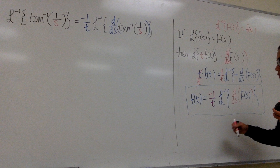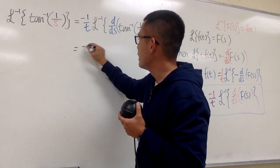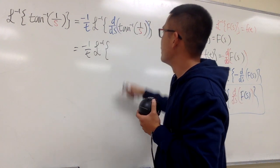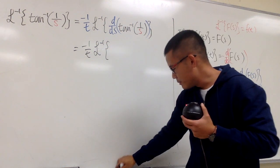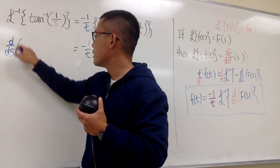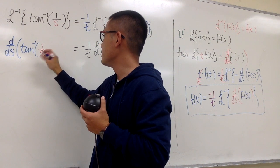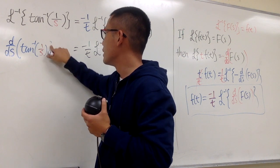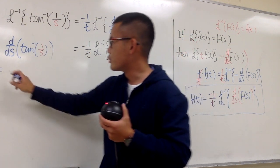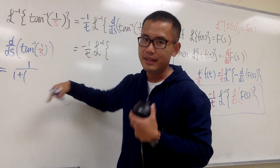So I'm going to multiply by negative 1 over t in the front — that's the deal. Now let me compute this on the side. We have d/ds of inverse tangent of 1 over s. The derivative of inverse tangent is 1 over 1 plus whatever you square, so we get 1 over 1 plus (1/s) squared.